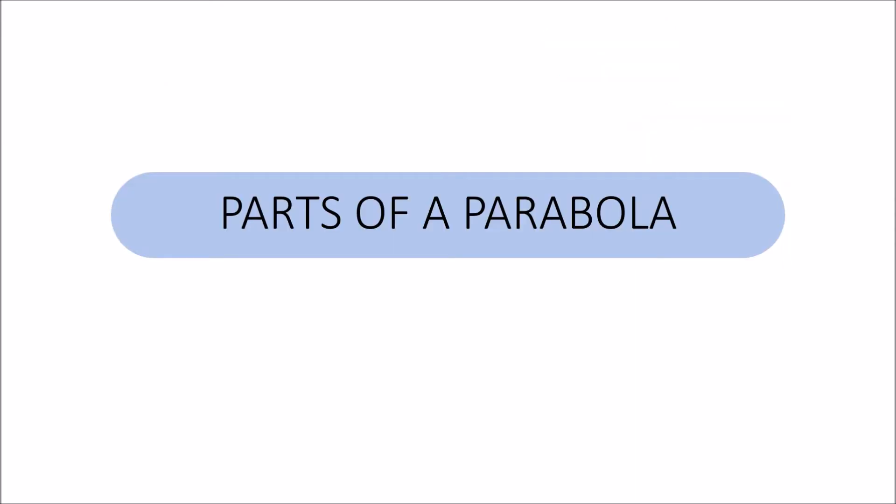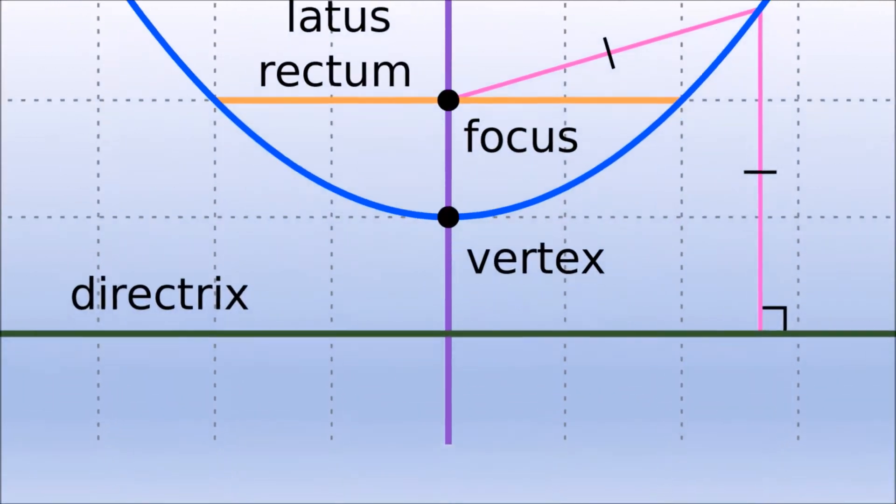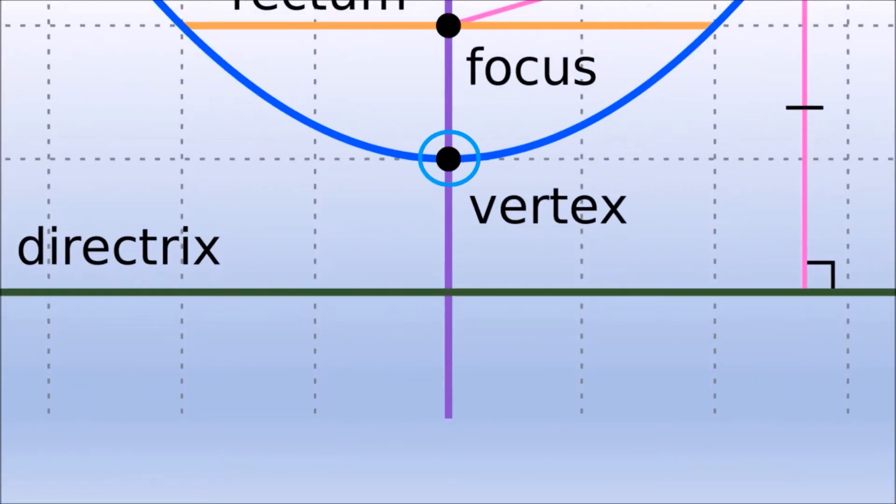Parts of a parabola: Vertex is the point where parabola and its axis of symmetry intersect each other.